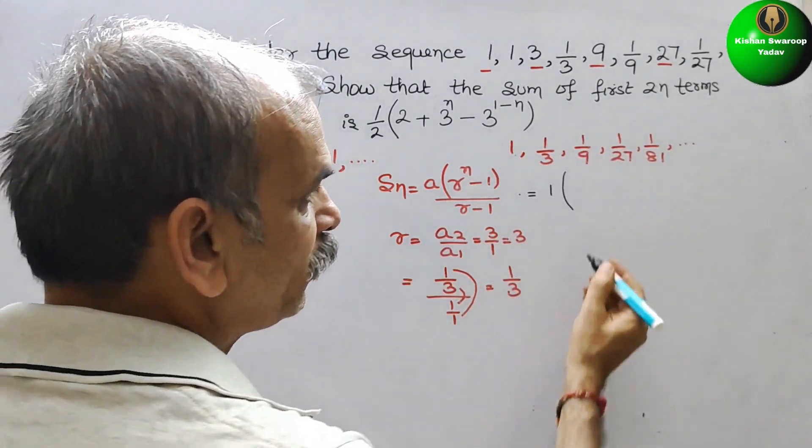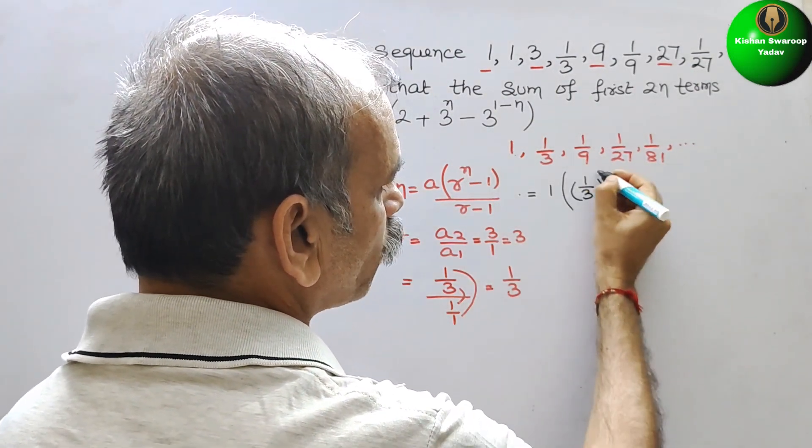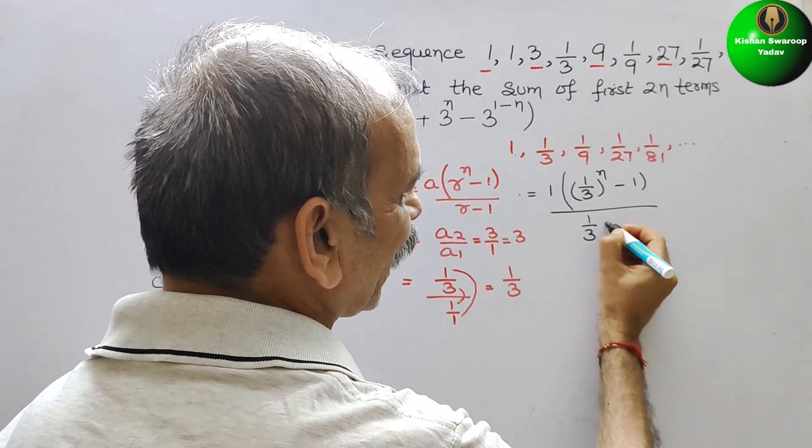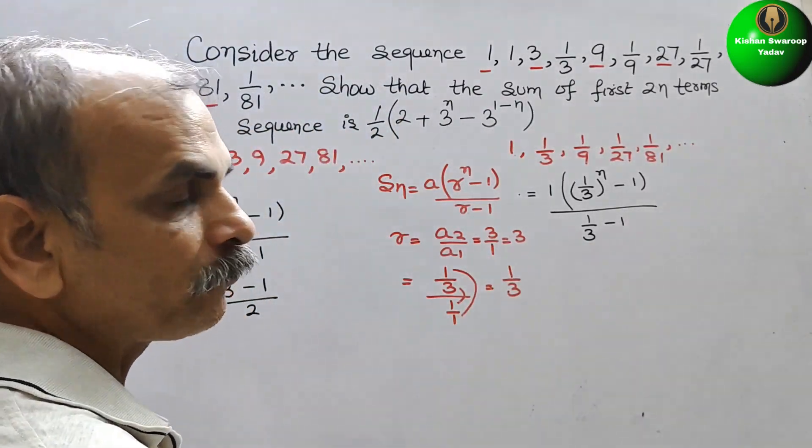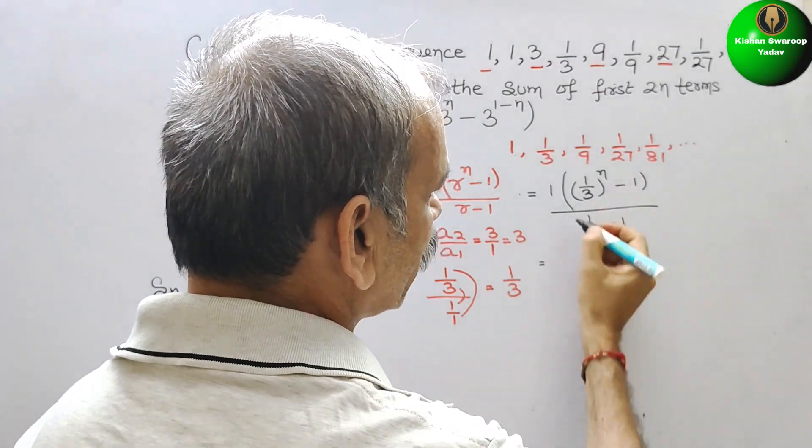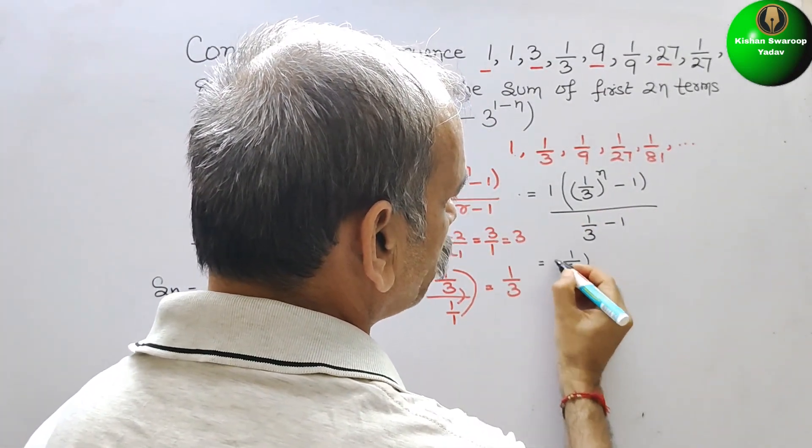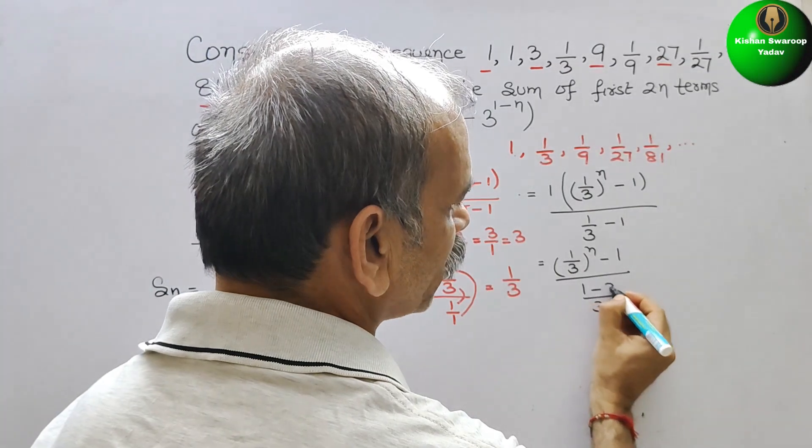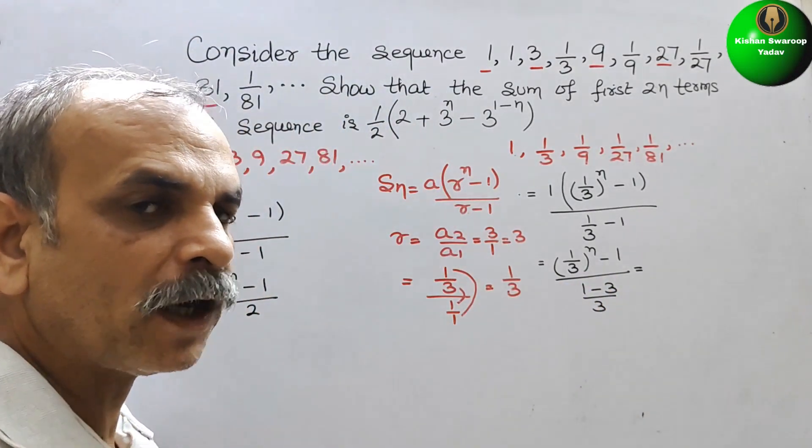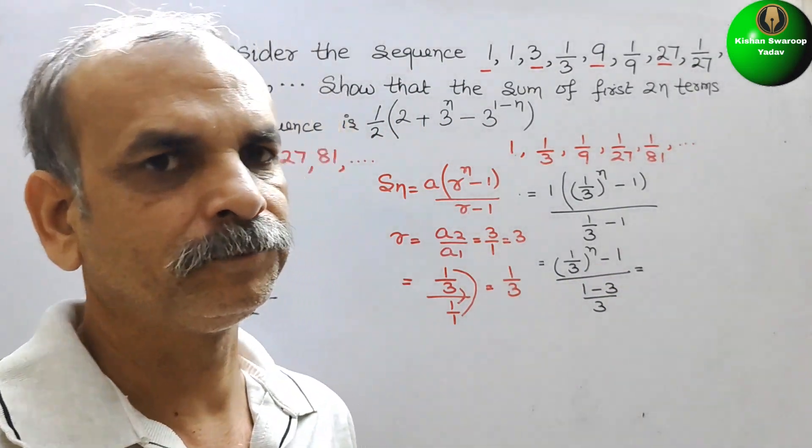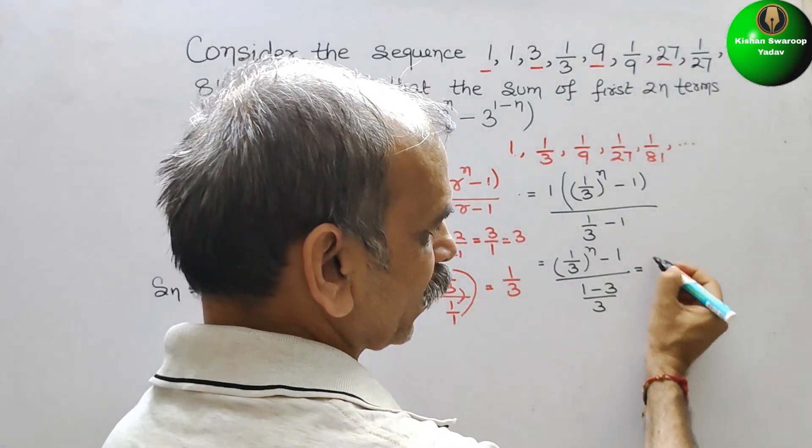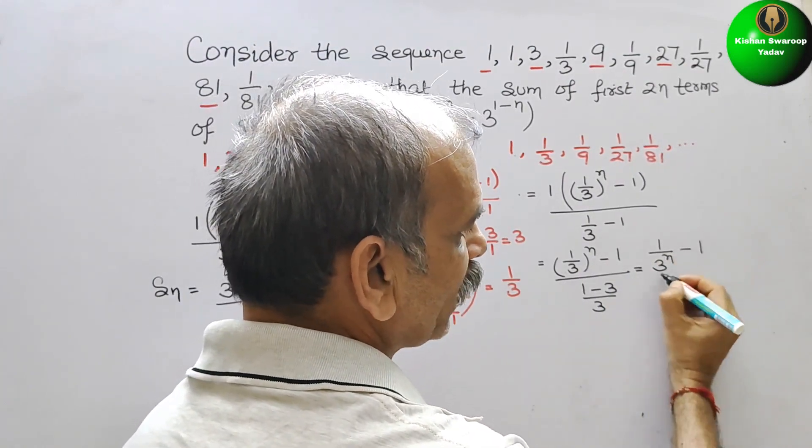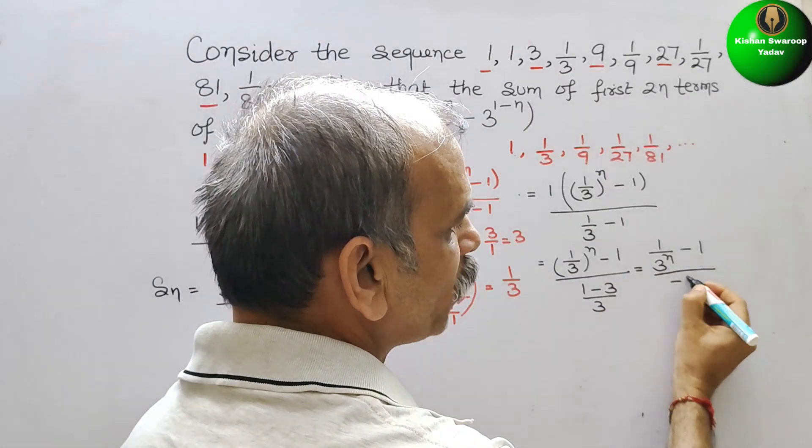We will multiply outer to outer, inner to inner. So here we will get 1/3 is your R. So now we will write (1/3)^n - 1 by R - 1, that means 1/3 - 1. Now we have to solve this. So here we will get (1/3)^n - 1 by, LCM is 3, we will get 1 - 3.